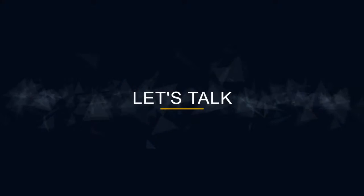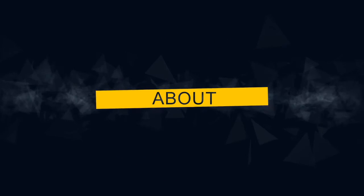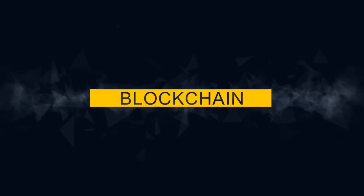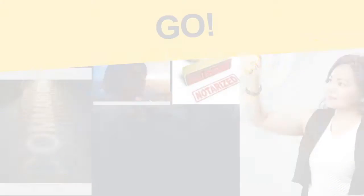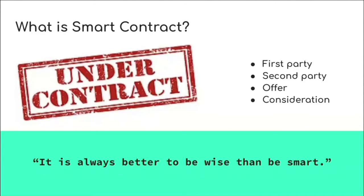What is a smart contract? I think it's terms that are not alien to us. A smart contract basically is a contract that is acting smart. It's just like any contract that we have. You need to have the first party, you need to have the second party, because if it's only one party, there's no point for us to get into a contract.